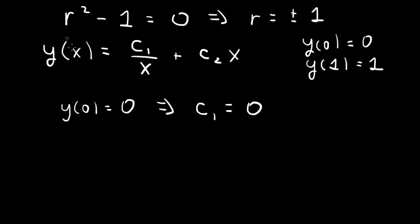And then finally y of 1 equals 1, the last boundary condition. That will mean y of 1 is equal to c2. So y of 1 is c2, and that's equal to 1. So we've used the two boundary conditions to get the two constants. So we get our final solution. Then y of x is equal to x.